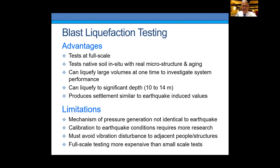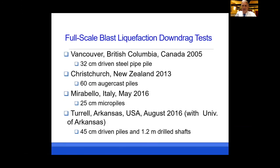There are limitations, of course. The mechanism of pore pressure generation is not identical to an earthquake — there are compression components, but pore pressures are largely developed by shear strains. We must avoid large vibrations and disturbance to adjacent structures and people, and full-scale testing is more expensive. Nevertheless, we've had the opportunity to do these tests at four sites: Vancouver, Canada, with 32 cm driven piles; Christchurch, with 60 cm auger cast piles; Italy, with micro piles; and Arkansas, with 45 cm driven piles and 1.2 m drilled shafts.